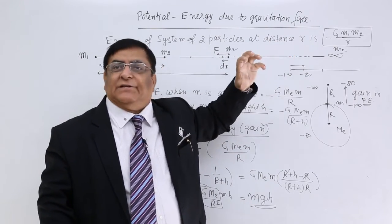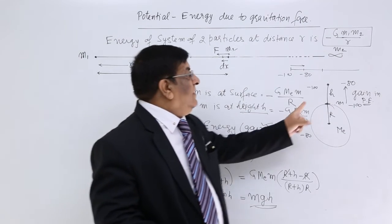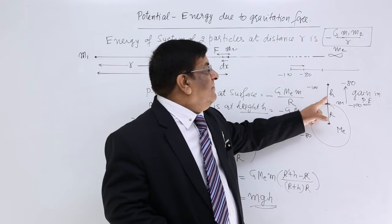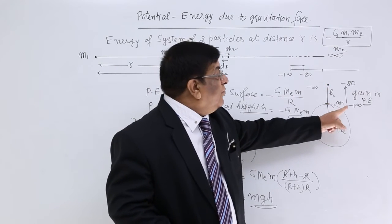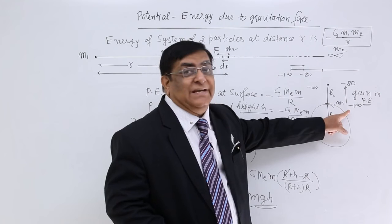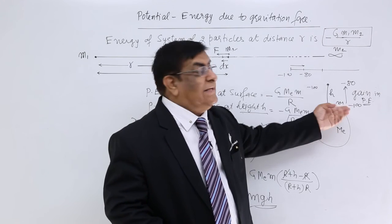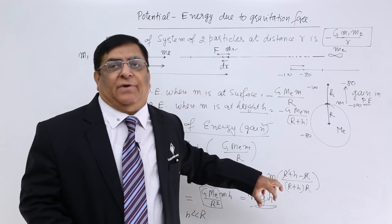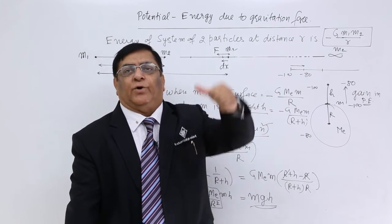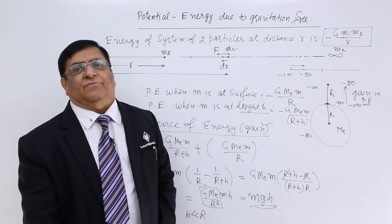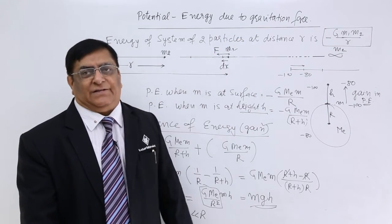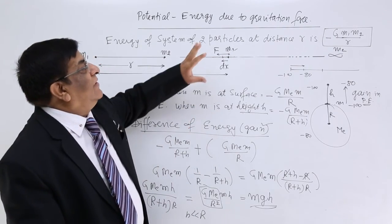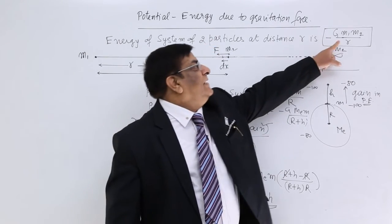G Me upon r squared is the formula for small g. So we can write this as M times g times H, which is mgh. This mgh formula is basically derived from the fundamental energy formula minus G m1 m2 upon r. When a body is at the surface it has certain potential energy, when it is at height h it has certain potential energy — both negative — but the gain in energy between them is equal to mgH.